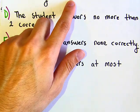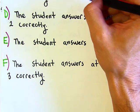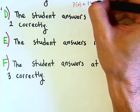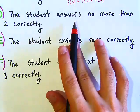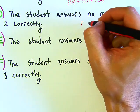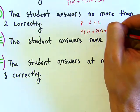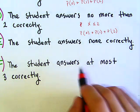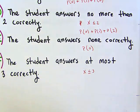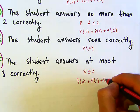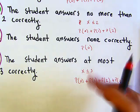Part C: fewer than three correctly — x less than 3, so P(0) + P(1) + P(2). Part D: no more than two correctly — x less than or equal to 2, so P(0) + P(1) + P(2). Part E: none correctly — just P(0). Part F: at most three correctly — x less than or equal to 3, so P(0) + P(1) + P(2) + P(3). Use the calculator for each and add the results.